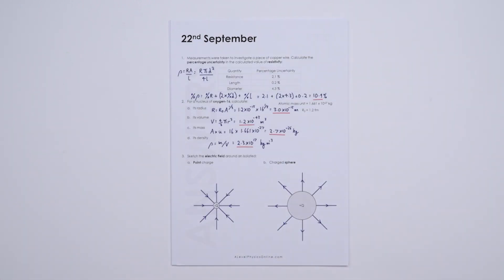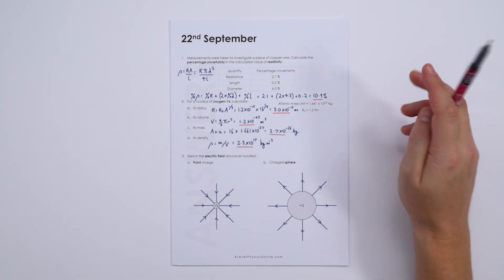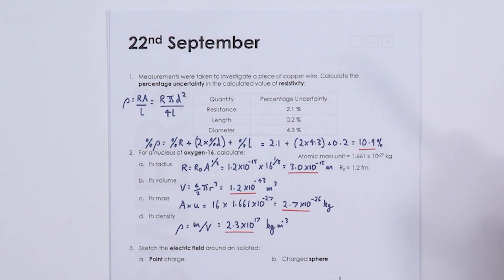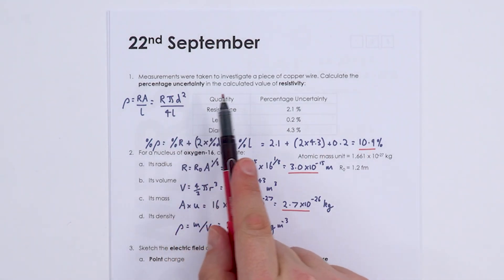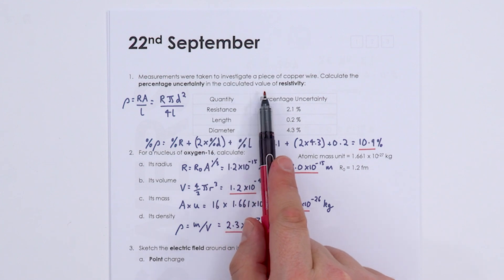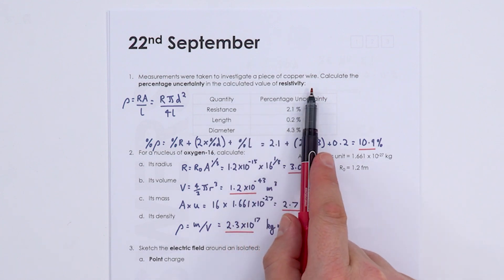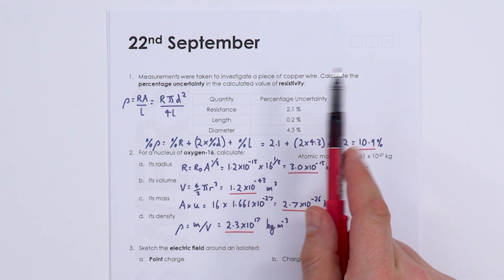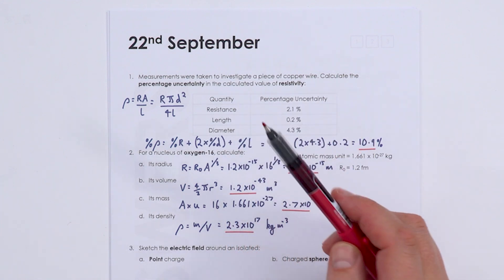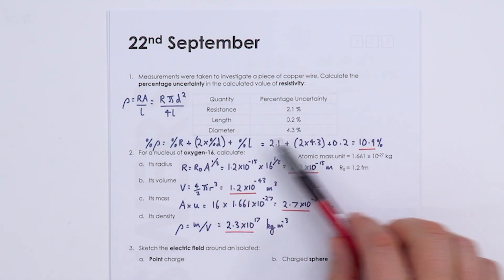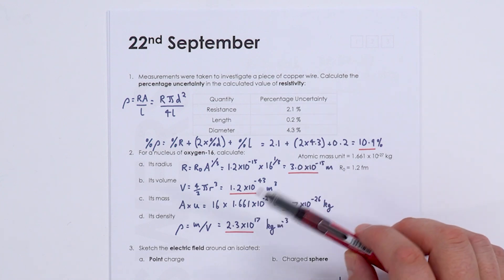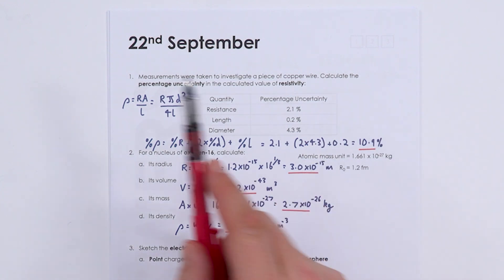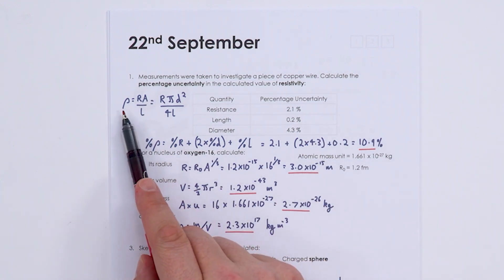On the 22nd, calculating percentage uncertainty in resistivity — there isn't much space in the book, so extra paper may be needed for these calculations.